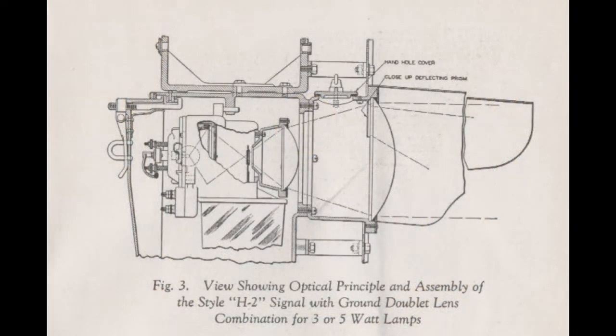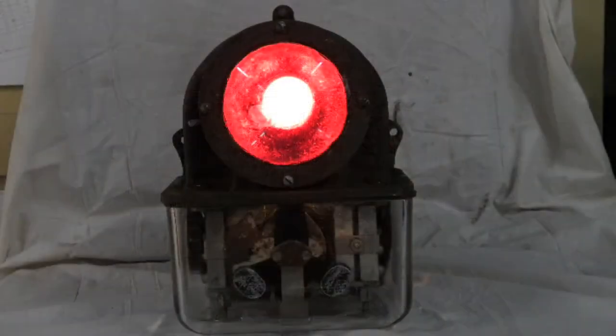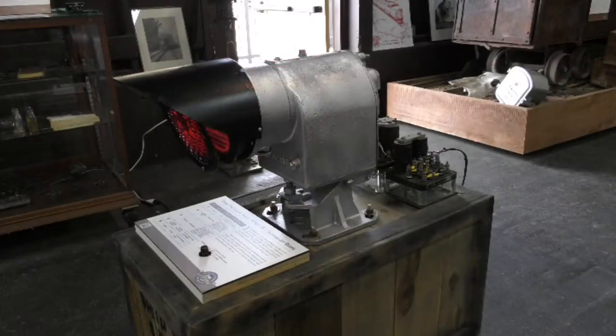This narrow beam is what gives searchlight signals their name. A searchlight signal head in a most basic sense contains two parts: an inner mechanism which contains the bulb, reflector, color armature, and inner lens, and an outer housing which contains the outer lens and provides a secure weatherproof container for the mechanism.